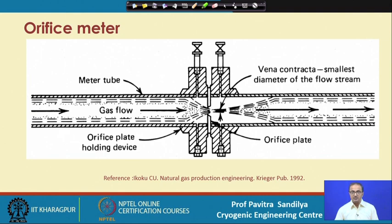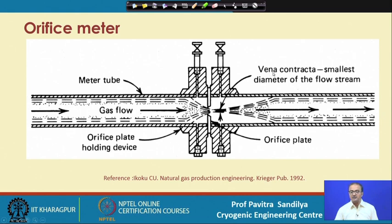This beveling is done to slowly expand the gas, because if the edge is very sharp there will be a lot of energy loss. To reduce the energy loss we make it a bevel edge. The flow converges at the orifice and then slowly starts expanding again, occupying the whole pipe. The minimum area attained by the stream is called the vena contracta, which gives the smallest diameter of the flow stream.